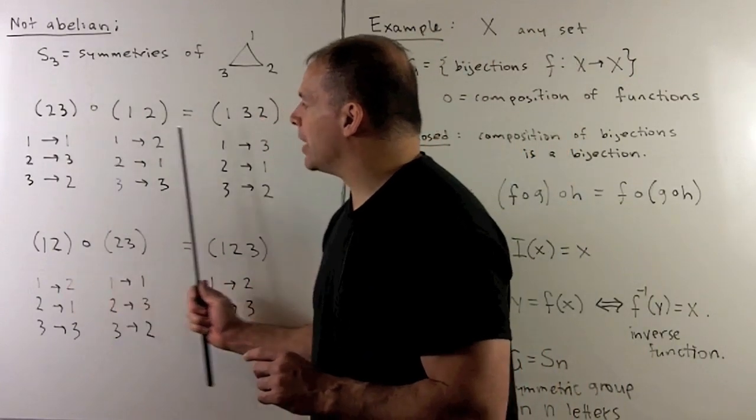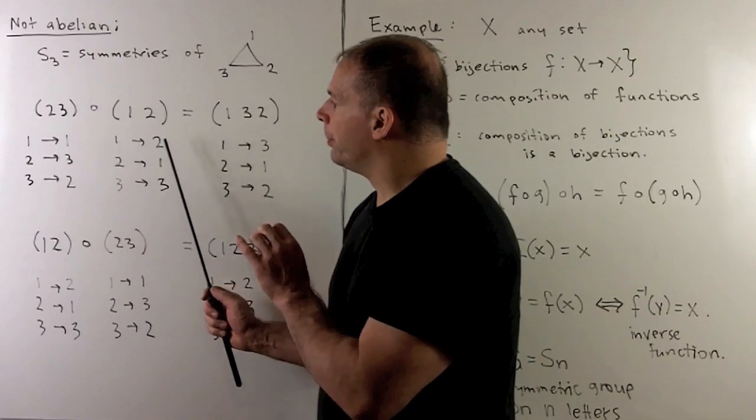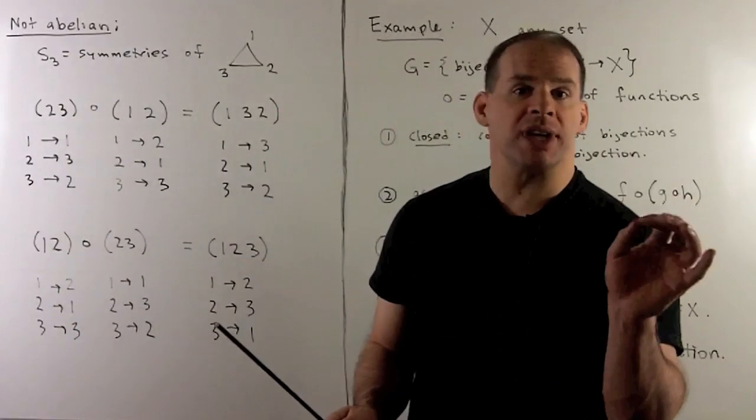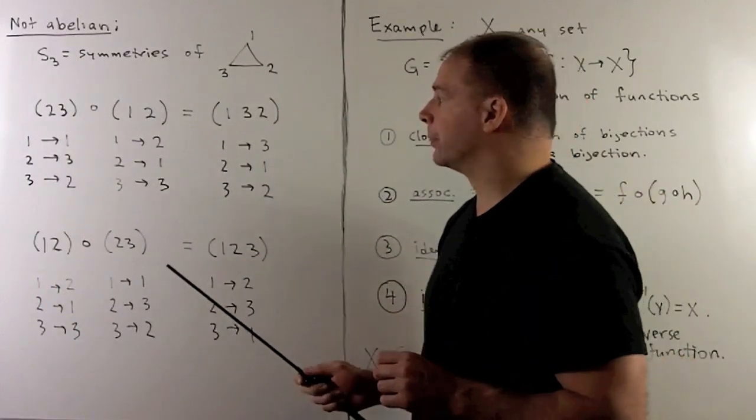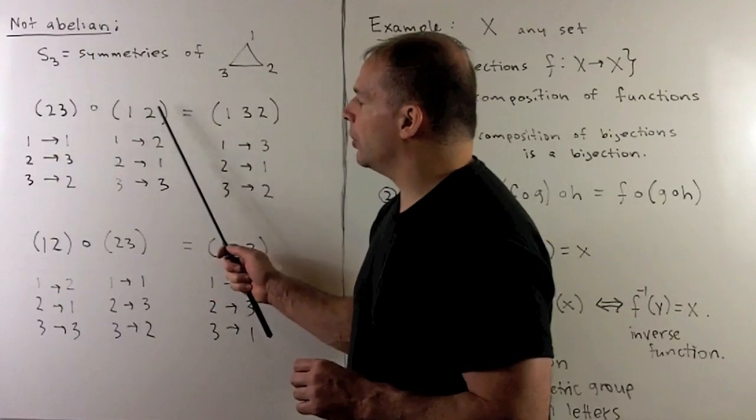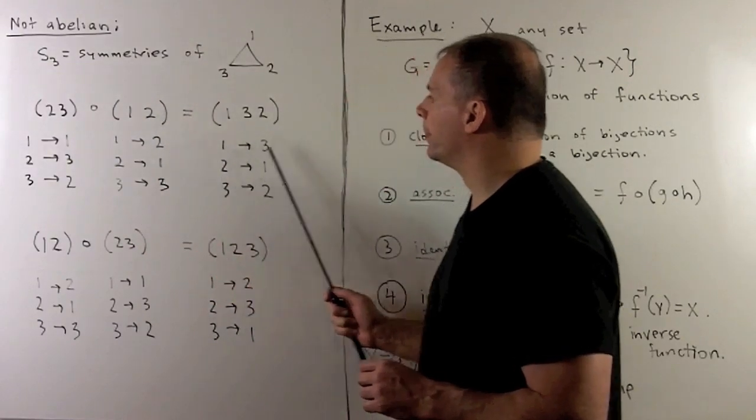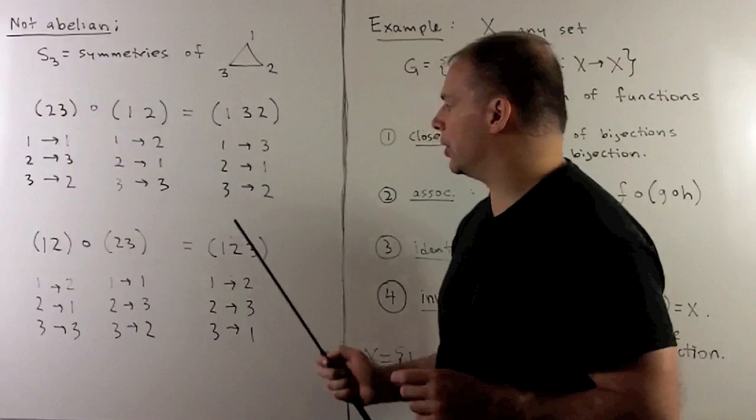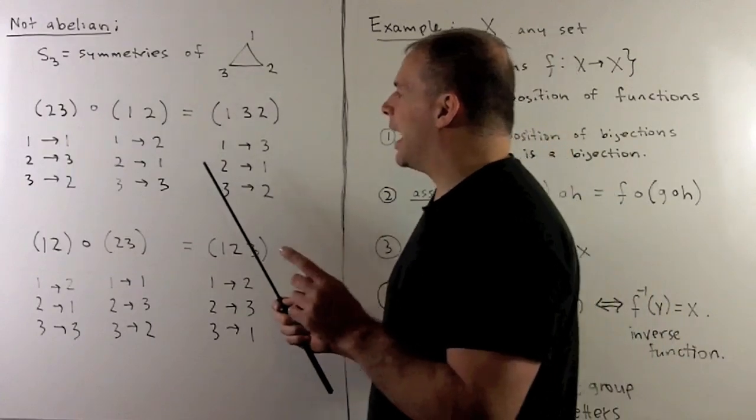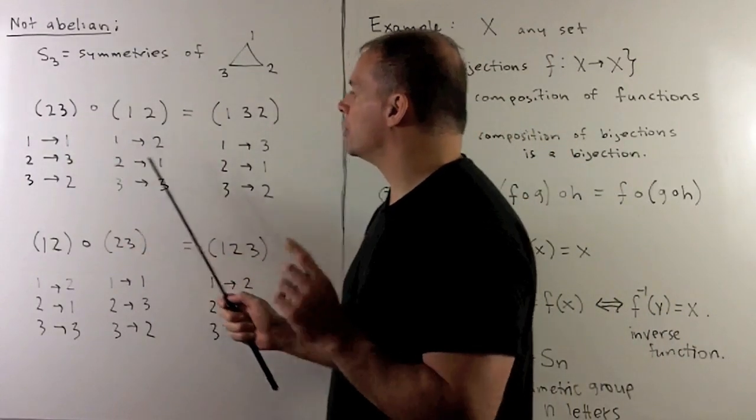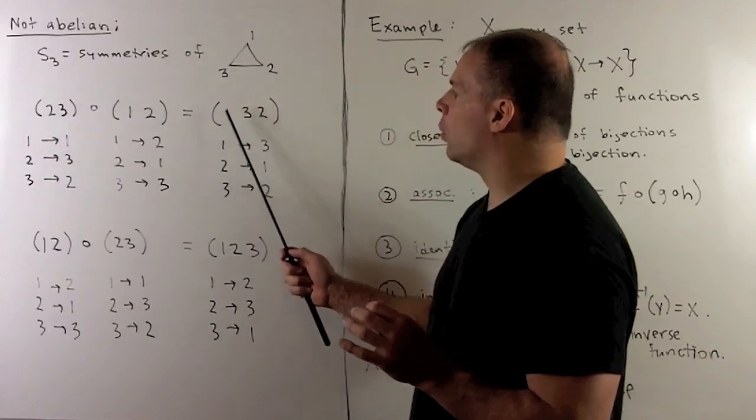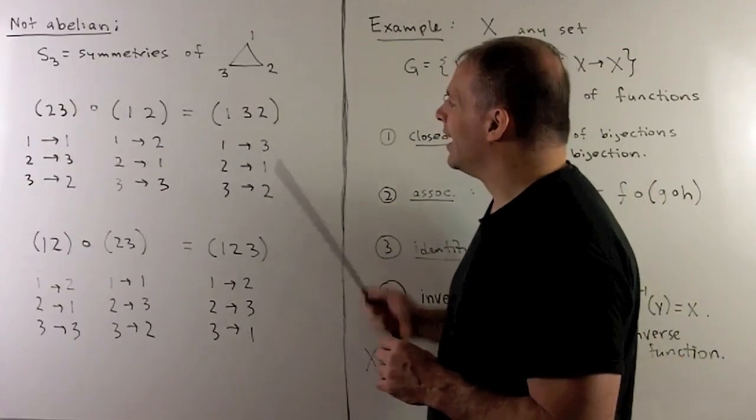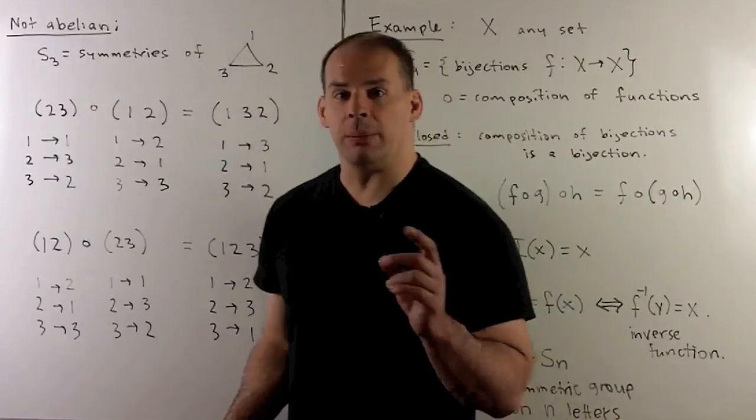We're composing bijections here. One thing to note: when I compose functions, we're going to go from right to left. Let's work this out using cycle notation. (1,2)(2,3): 1 goes to 2, 2 goes to 3, so 1 goes to 3. 3 goes to 3, 3 goes to 2, so 3 goes to 2. Then 2 goes to 1, 1 goes to 1, so 2 goes to 1. We get the 3-cycle (1,3,2). If we multiply in the other order, we get the 3-cycle (1,2,3). These are not equal. So S₃ is non-abelian.